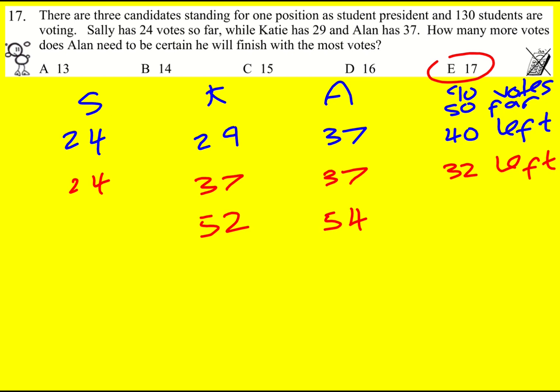Another way you can do it is to say that Alan with 37 votes needs x more and this has got to be greater than Katie's 29 votes plus the remaining amount that she could potentially get. So she could get the other 40 less the number of votes that Alan then gets.